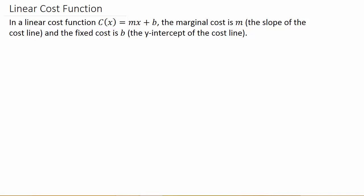So let's take a look at this linear cost function. It says in a linear cost function C(x) is equal to mx plus b. So this probably looks familiar, you've seen this for slope intercept form of a line y equals mx plus b. m is our marginal cost, which is the slope of the line. The number in front of x is your slope. And b is our fixed cost, which is the y intercept.